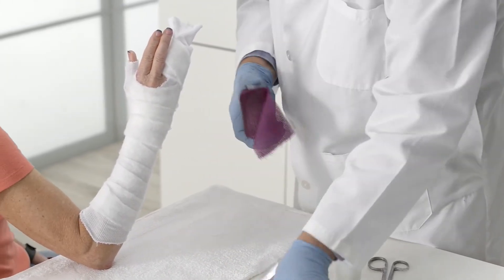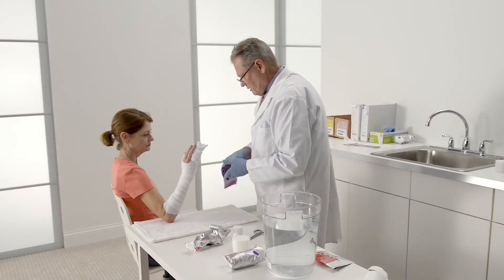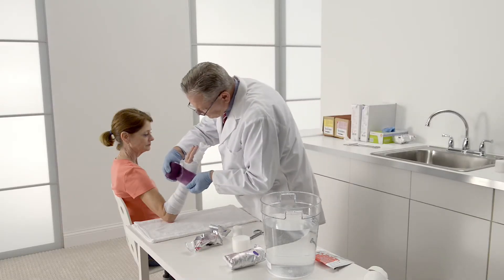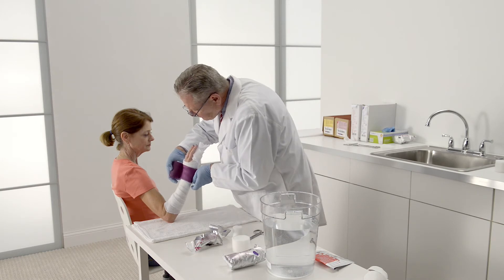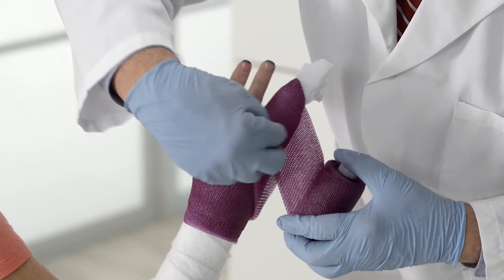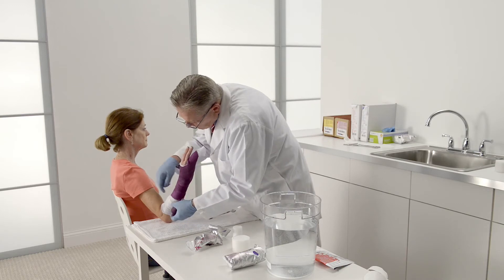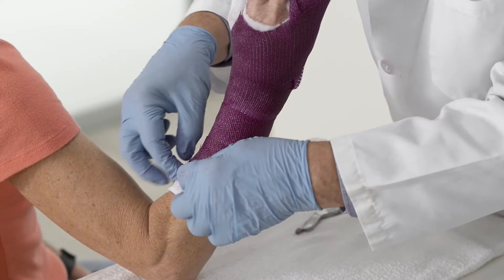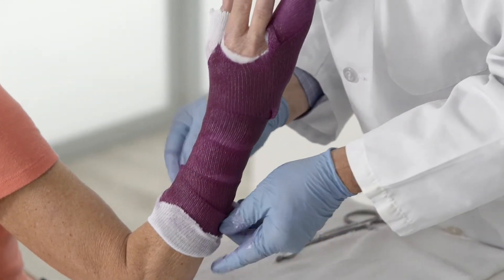Now add the first layer of soft cast. The first half of the cast will be applied without dipping the roll in water. Wrap the wrist and affected fingers. Then wrap down the arm to just below the forearm crease. Fold back the stockinette over the first layer of cast.